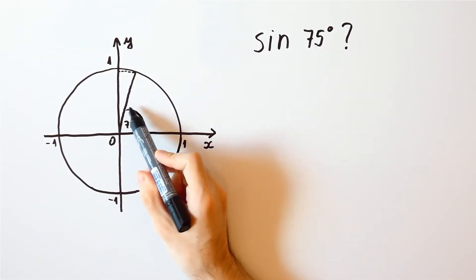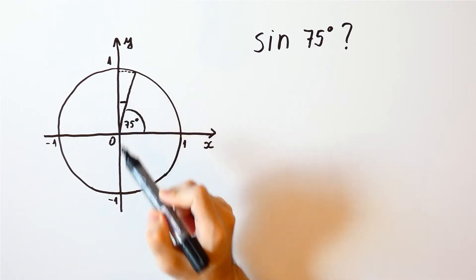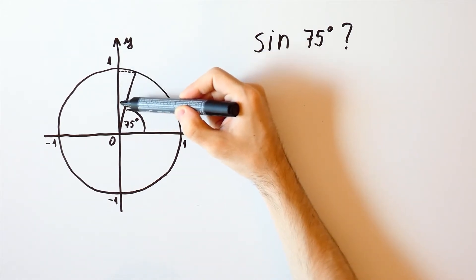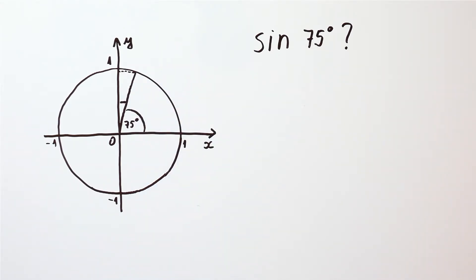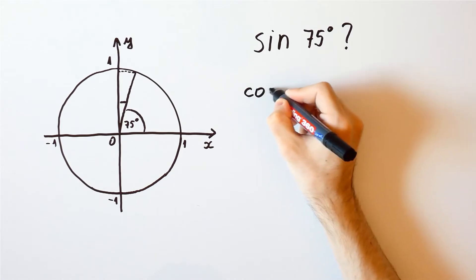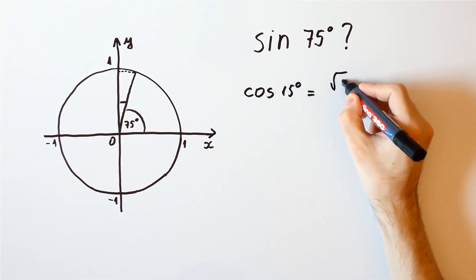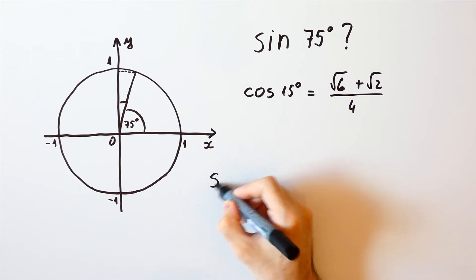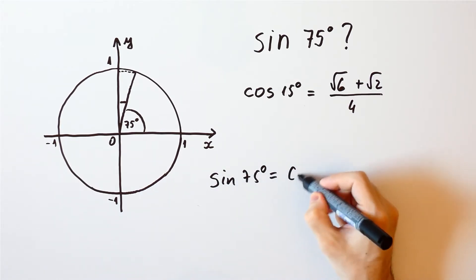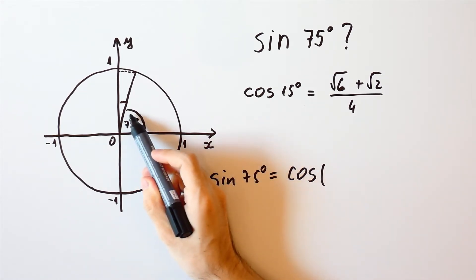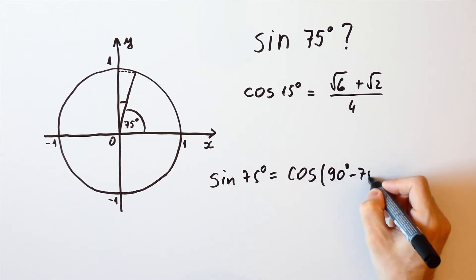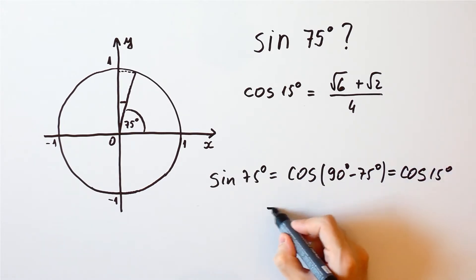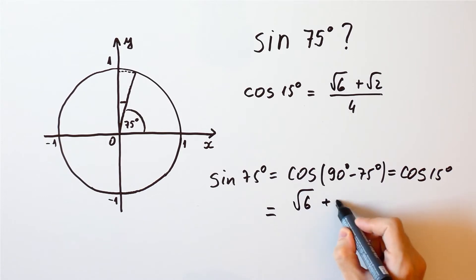If this angle is 75 degrees, then this angle here is 15 degrees, and that means that the sine of 75 degrees is equal to the cosine of 15 degrees. In an earlier video, we showed that the cosine of 15 degrees is equal to the square root of 6 plus the square root of 2 over 4. And now the sine of 75 degrees is equal to the cosine of 90 degrees minus 75 degrees, which equals the cosine of 15 degrees, which is the square root of 6 plus the square root of 2 over 4.